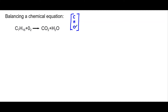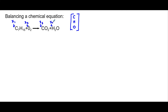We're going to put carbon first, hydrogen second, and oxygen third — those are all the elements in this equation. We want to know how many of each of these molecules we need to balance the elements on each side, so we need coefficients: x1, x2, x3, x4.